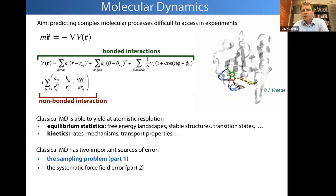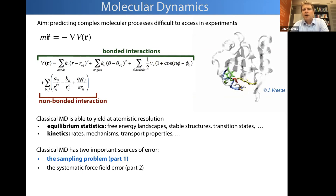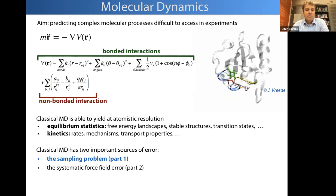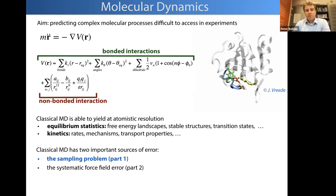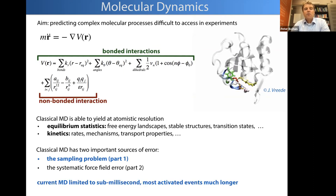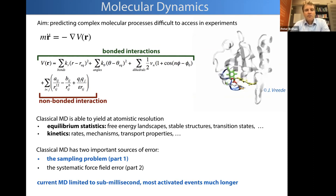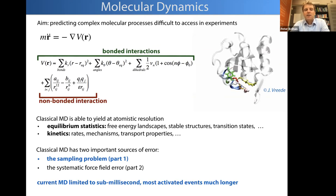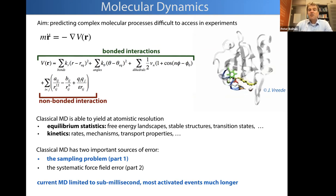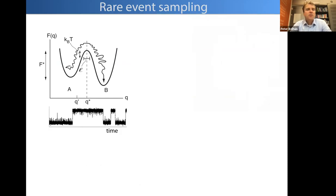Classical MD has two important sources of error. First, the sampling problem — we need to cover enough of phase space to make a proper estimate of our statistics. Second, a systematic force field error. I'm going to focus on the sampling problem. One cause of the sampling problem is that current MD on all-atom systems is still limited to under the millisecond timescale, and most activated events can take much longer.